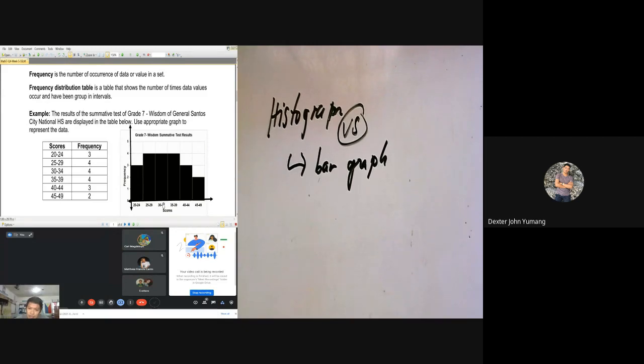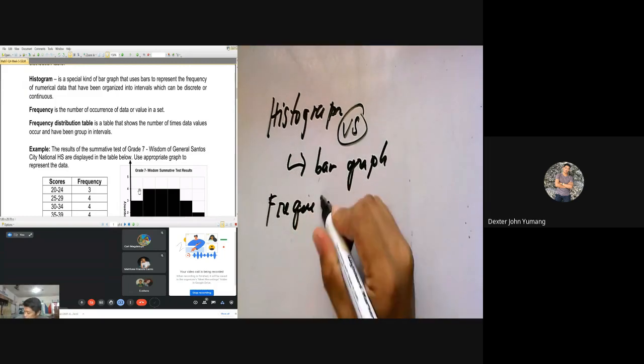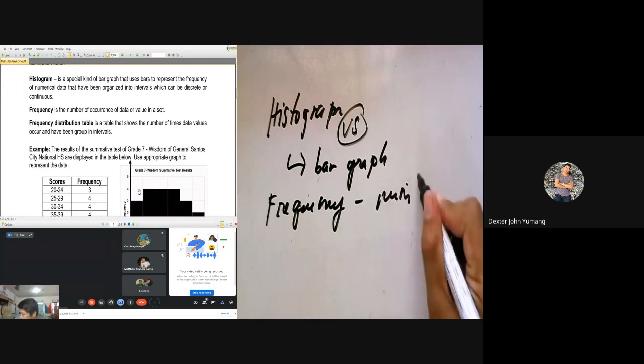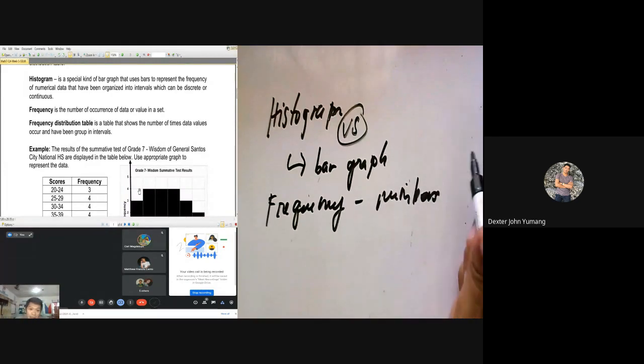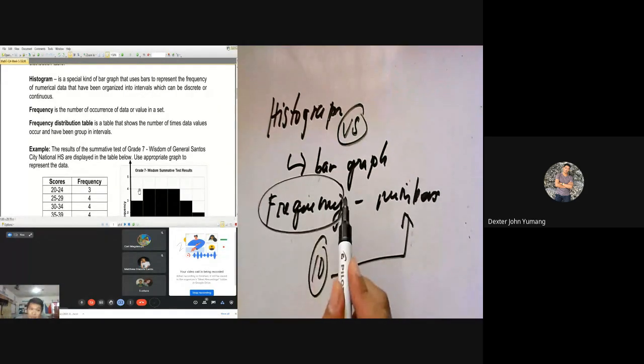Next, the next word that we will be encountering is the word frequency. When you say frequency, you are talking about the numbers, or kung ilan po ba yun sila. Example, who among you have TikTok account? So para sabihin natin sampo, therefore that number or that the number of persons who have TikTok account is called the frequency. Pag tinanong sa inyo ilan po ang frequency ng gumagamit ng TikTok, ang sagot is 10 kasi yan po yung number nakuha.